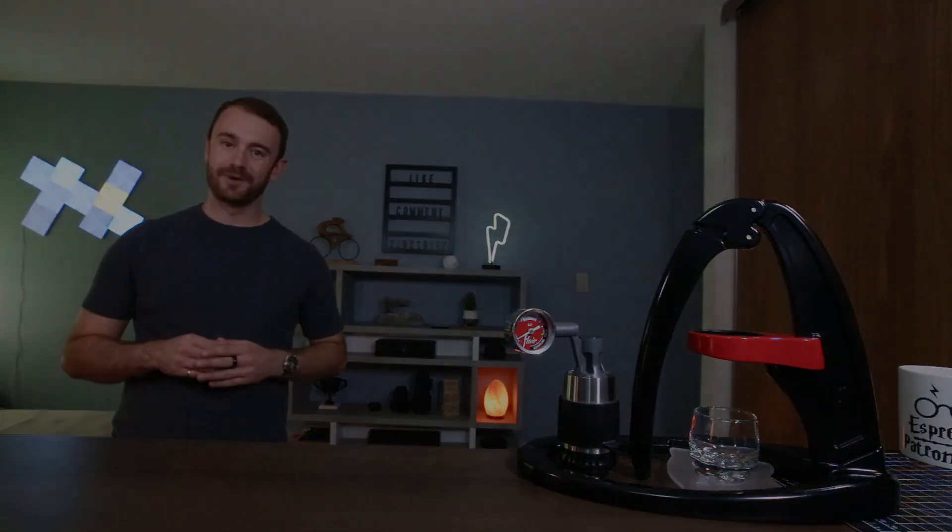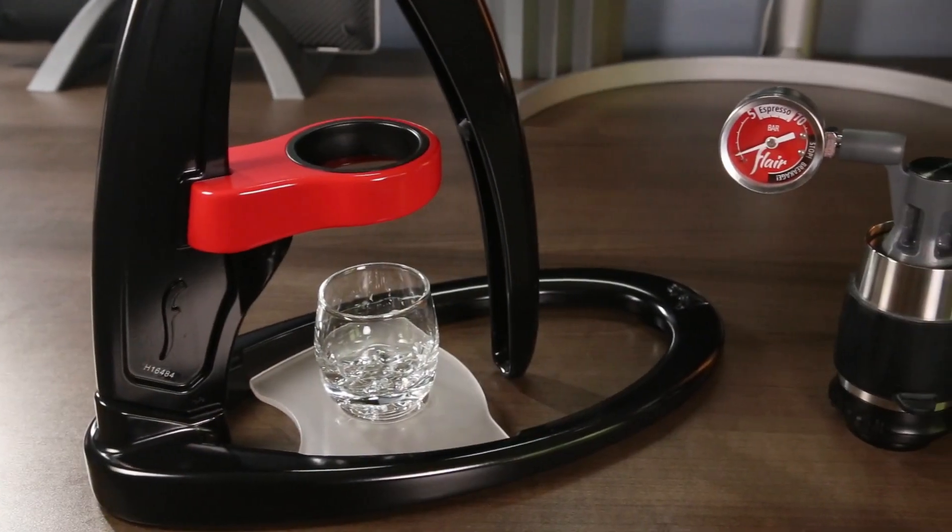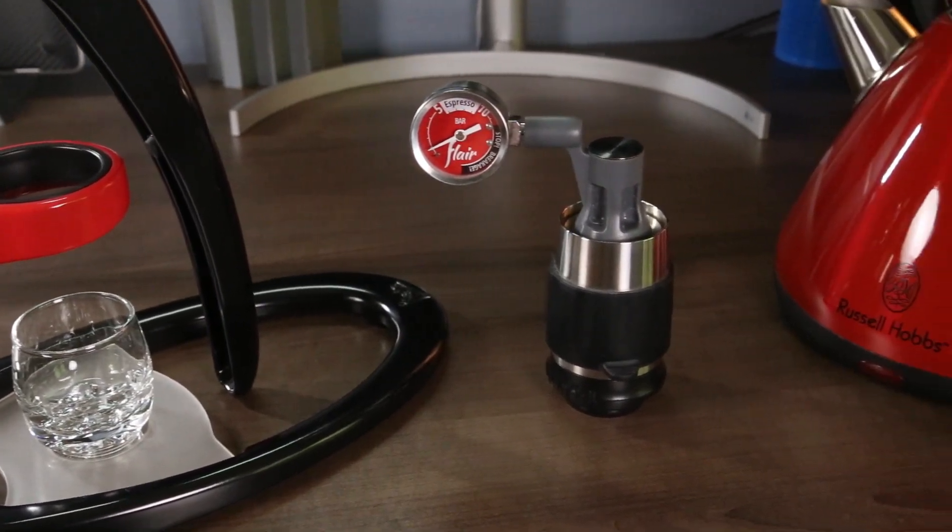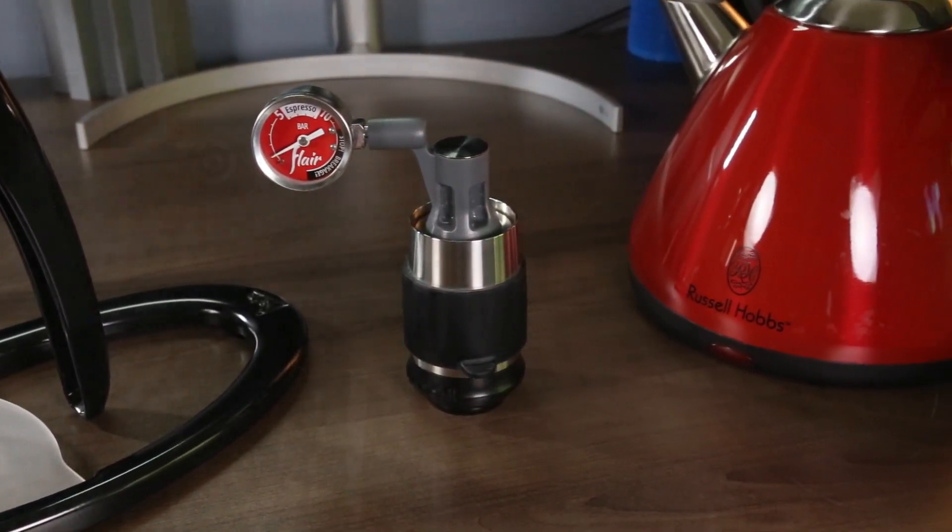Overall, I'm really happy with the style and build quality of the Flair espresso machine. It also takes up less counter space than my old espresso machine did, which is always welcome in my tiny apartment. The biggest drawbacks of the Flair are the time it takes and the lack of steaming wand for frothing milk when making specialty drinks.